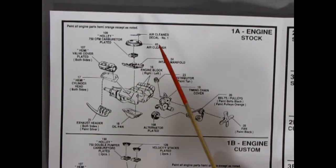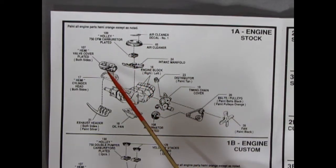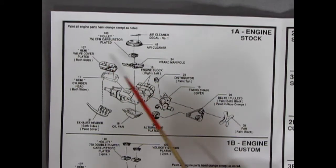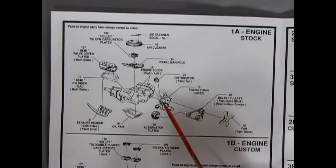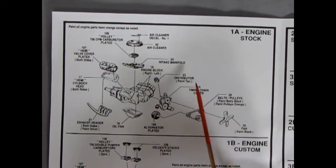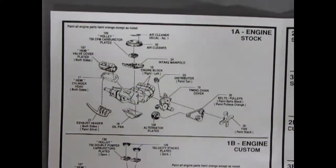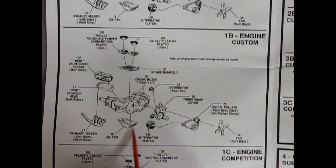In our first panel here, we have the stock engine. We've got our air cleaner, carburetor, intake manifold, the Hemi valve covers which are plated for both sides, cylinder heads. The engine block has the transmission on it in two pieces that glue left and right. We have our distributor, timing cover, belts and pulleys, the fan, the alternator, oil pan and exhaust headers. That's the stock configuration.